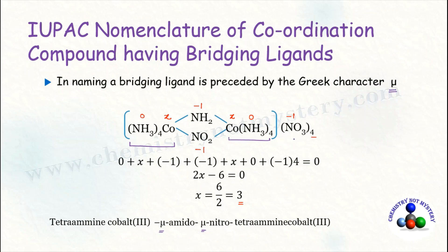The counter ion here is nitrate, so we write 'nitrate.' The full name of this molecule is tetraamine cobalt(III) μ-amido μ-nitro tetraamine cobalt(III) nitrate. In the next video on coordination complexes, we are going to discuss isomerism in coordination compounds.